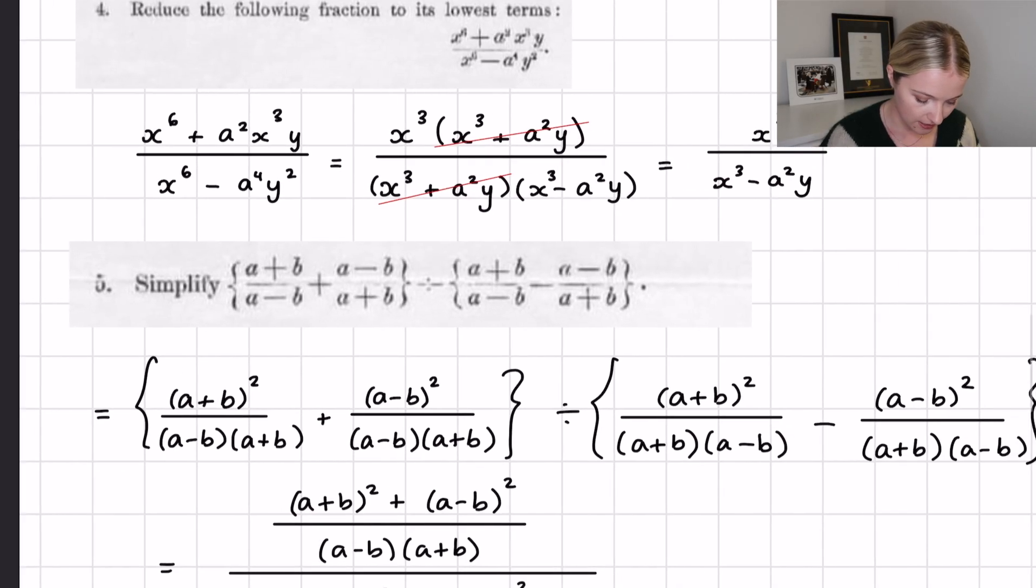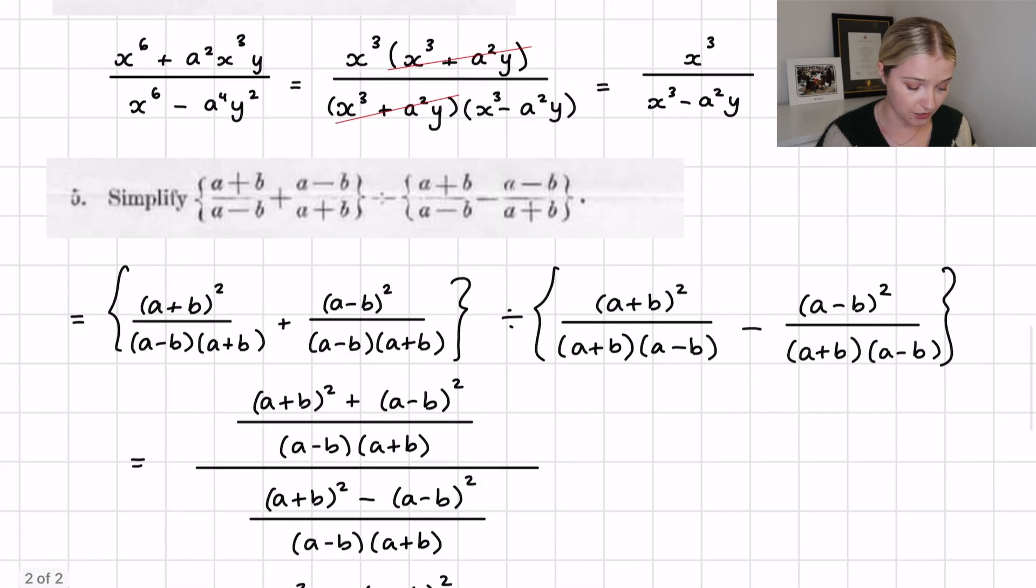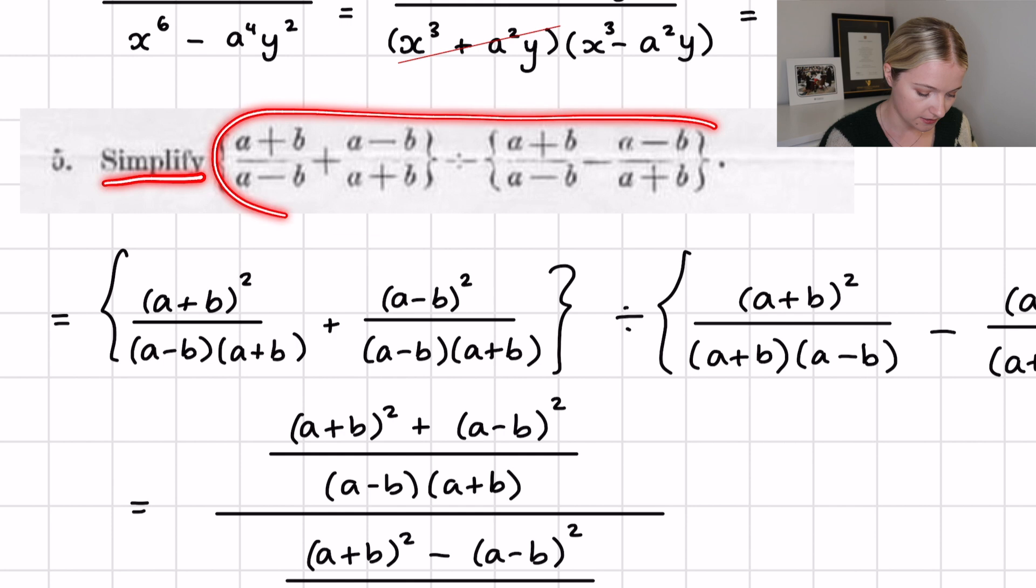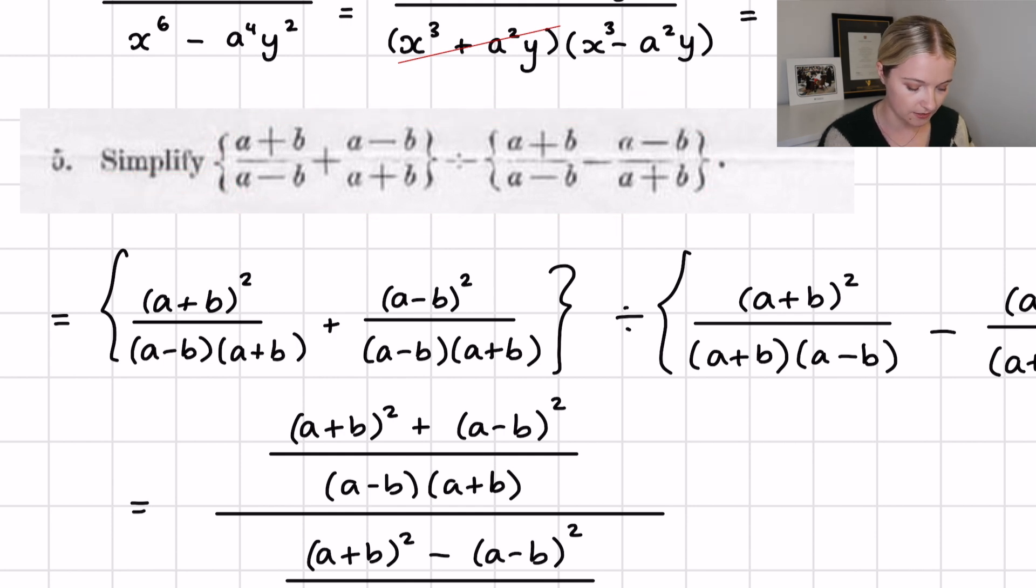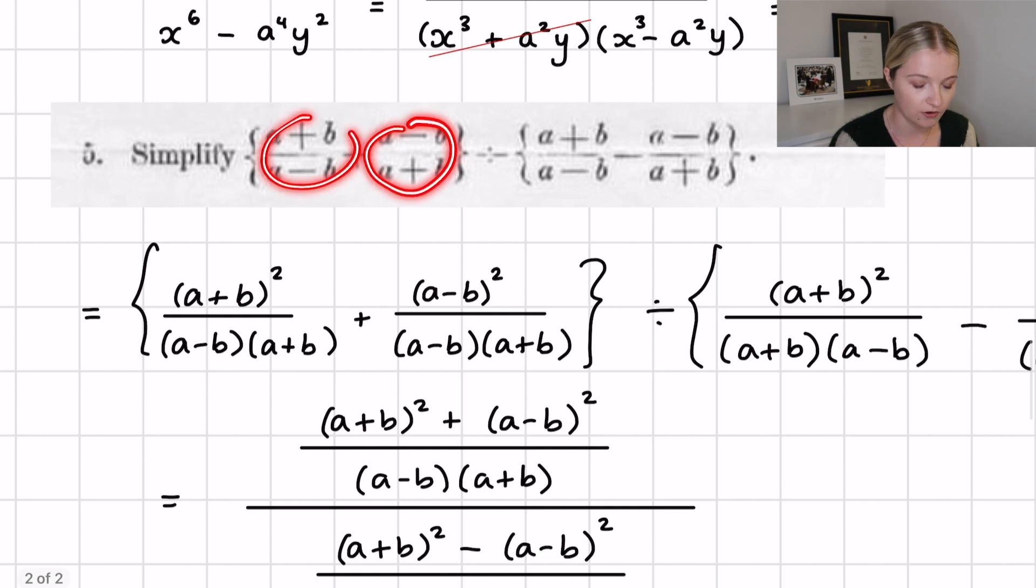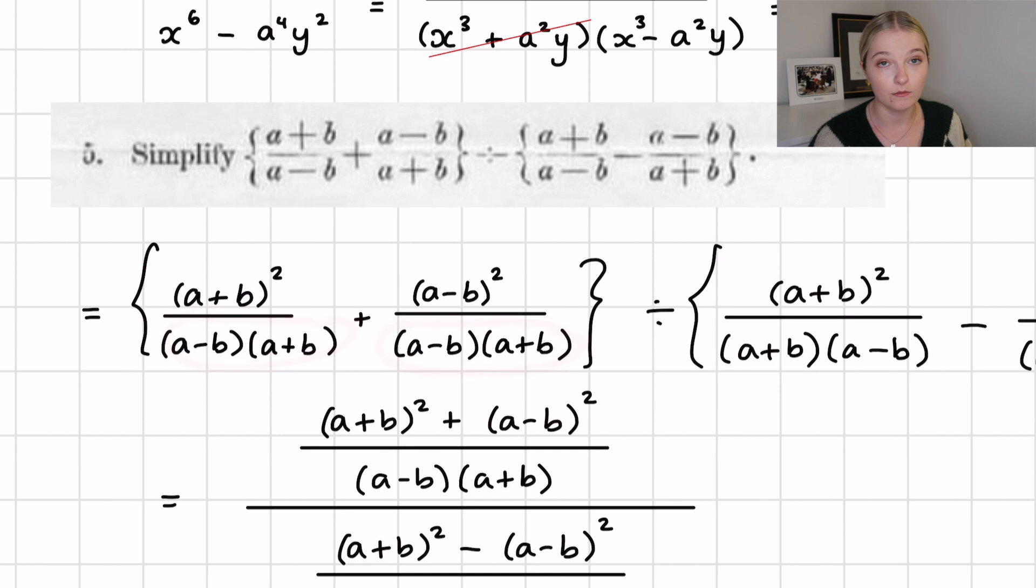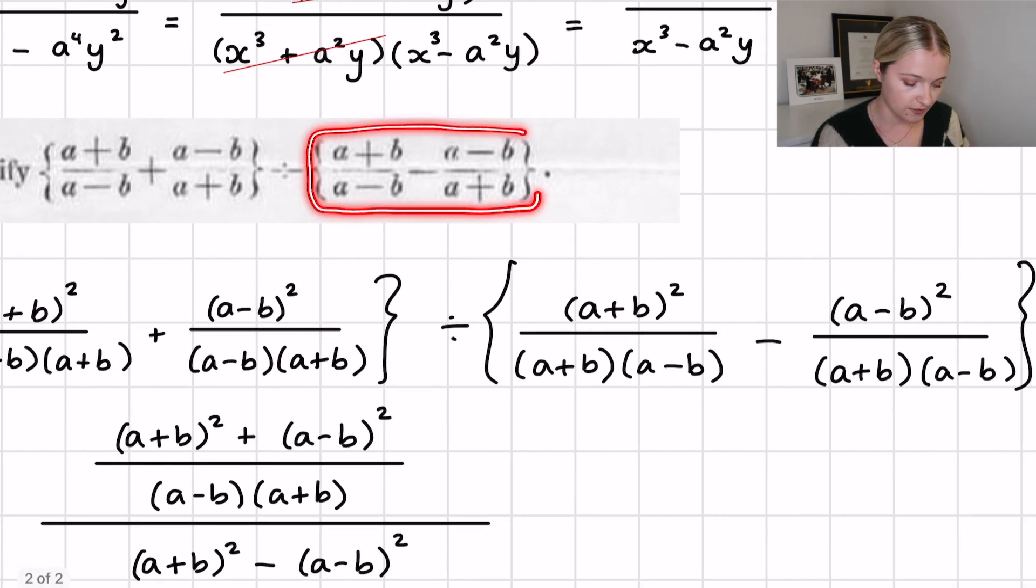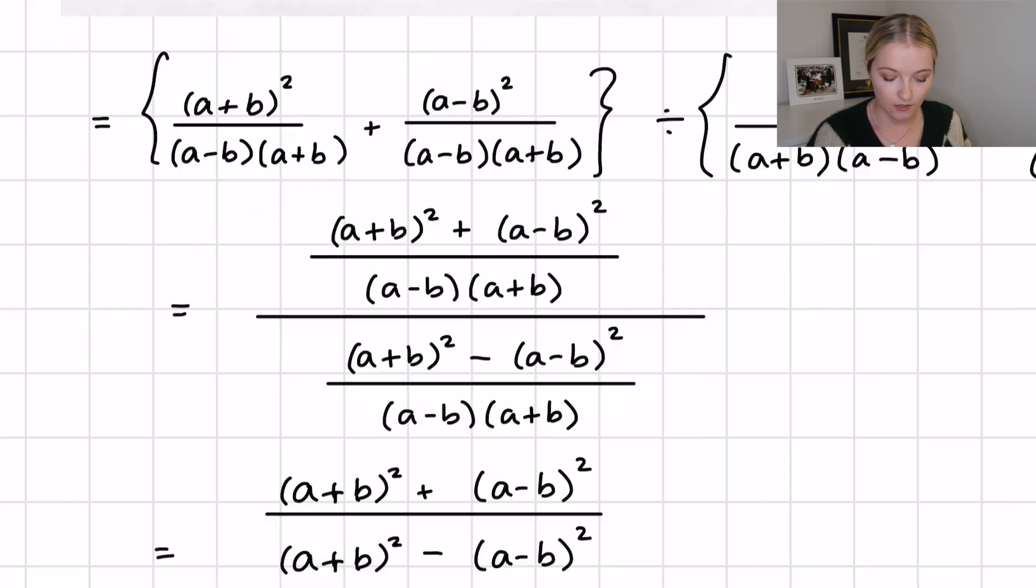Now question number five was a little bit longer. It's quite a nice question really. We want to simplify all of this. We have a plus b's and a minus b's plus different fractions of each. So what I did to begin with was I said let's make both of these fractions have a common denominator. All you have to do to make them have a common denominator is for this one we multiply by a plus b, so we get a plus b squared divided by a minus b times a plus b. We do something similar for this one but this time we multiply it by a minus b, and we can do the exact same for what we are dividing this by.